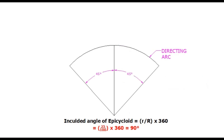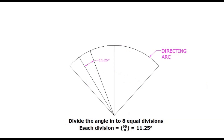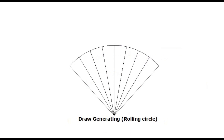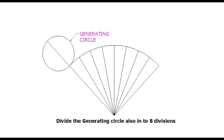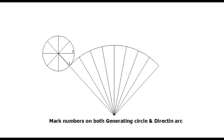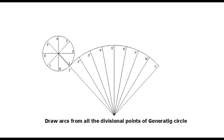Half of this angle should be taken on both sides of the vertical line. Now divide this angle into an equal number of divisions. Next, draw the generating circle or rolling circle. Extend the extreme left-hand side line for a distance equal to the diameter of the generating circle, then draw the generating circle. Divide the generating circle into the same number of divisions. Mark numbers on the generating circle and on the directing arc as well.